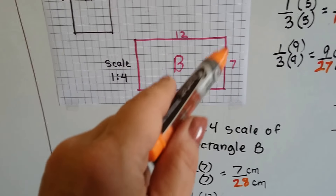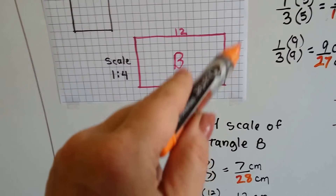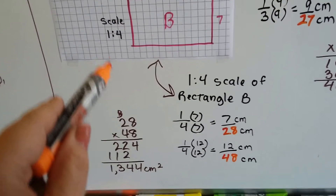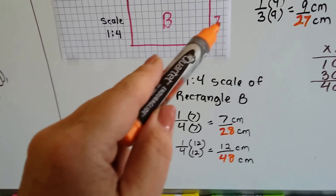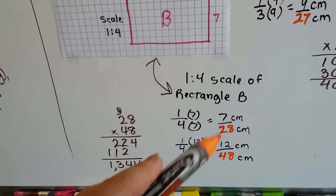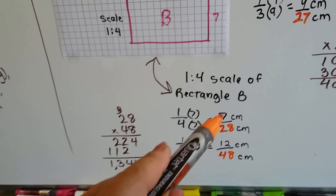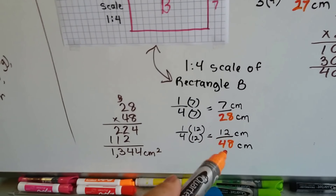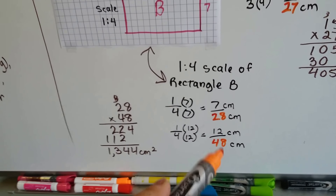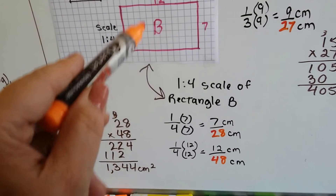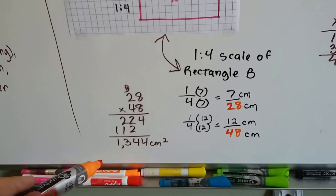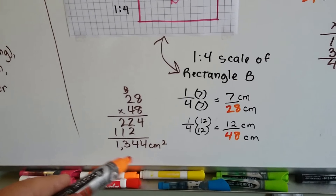In Rectangle B, it's seven centimeters this way and twelve centimeters this way, and the ratio is one to four. We multiply seven by one-to-four to get seven over twenty-eight — that's one-fourth. And twelve over forty-eight — that's also one-fourth. So the actual dimensions are twenty-eight by forty-eight, and the actual area is twenty-eight times forty-eight, which gives us one thousand three hundred and forty-four centimeters squared.